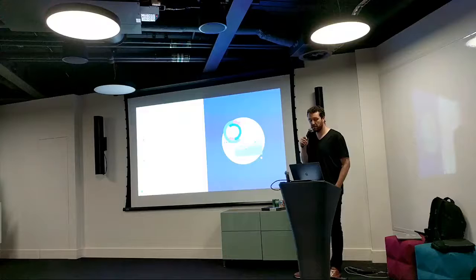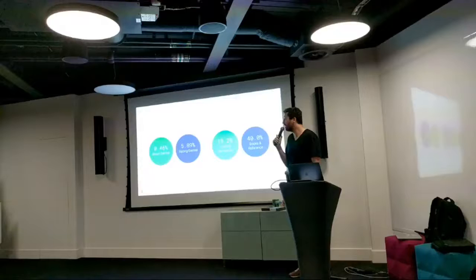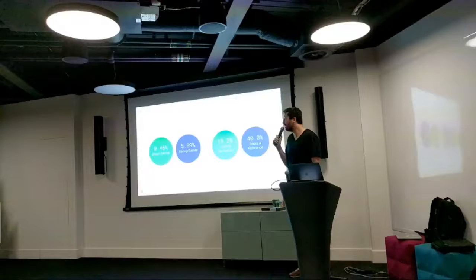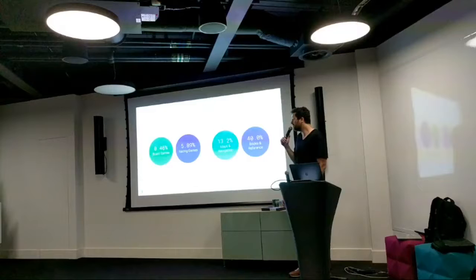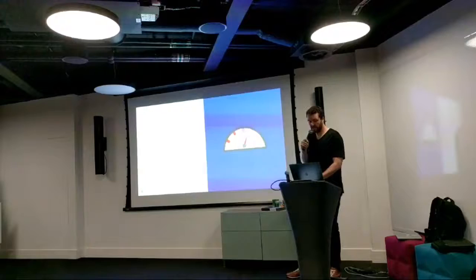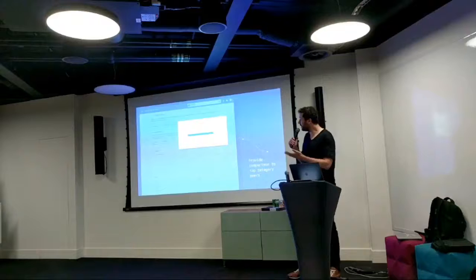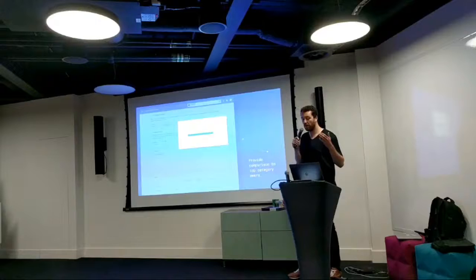Another thing we realized over the last year was really important: giving developers insights into how they compare with the apps in their category. There's a lot of variation across different categories — for example, for cold start time across a few different types of games, or permissions across maps and navigation versus books and reference. In the console, you can see the 25th, 50th, and 75th percentile breakdown for top apps in your category, and where you stack up versus other apps.